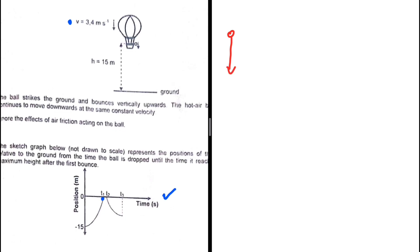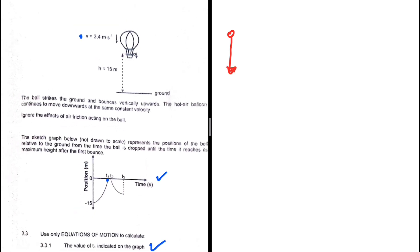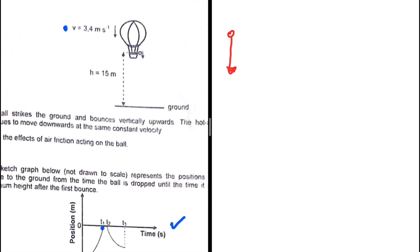Let's take a look at the information we have for that part of the motion. Even though the ball is being dropped, it was on a hot air balloon which had a constant velocity, so its initial velocity vi would be that of the hot air balloon at 3.4 meters per second downwards. The acceleration is 9.8 meters per second squared downwards, since it is now in free fall after being dropped.